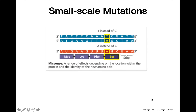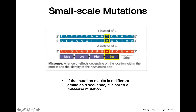If we change a nucleotide pairing and that results in the substitution of one amino acid with a different amino acid, that's called a missense mutation. In a missense mutation, the change in the nucleotide sequence results in one amino acid being switched out for another. Depending on the characteristics of the old and new amino acid, this could have really disastrous effects on the structure and function of the protein, or it could not matter too much.